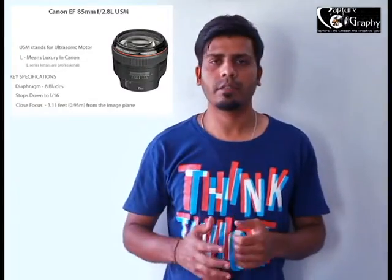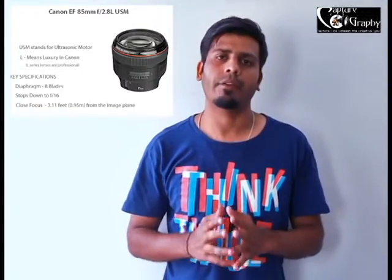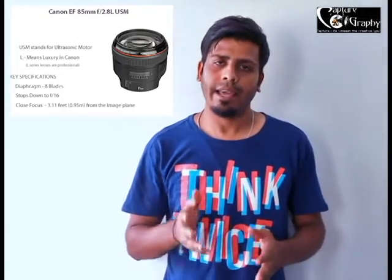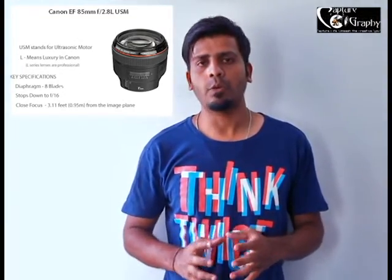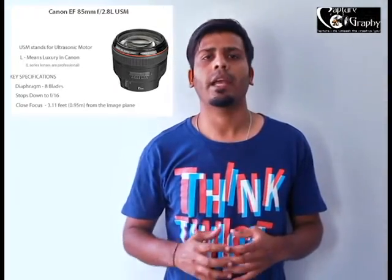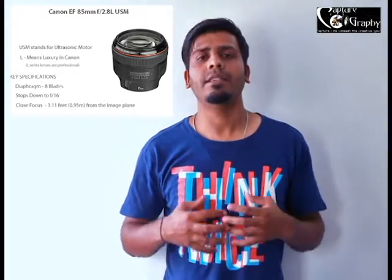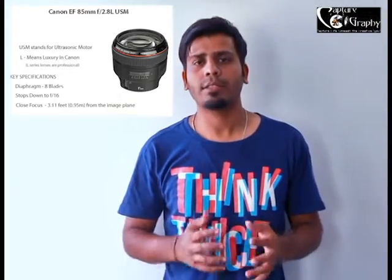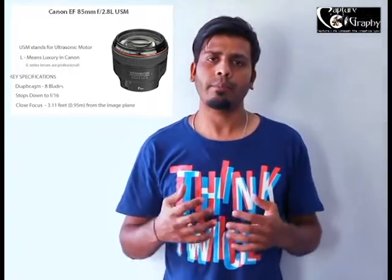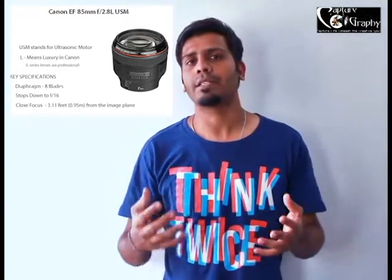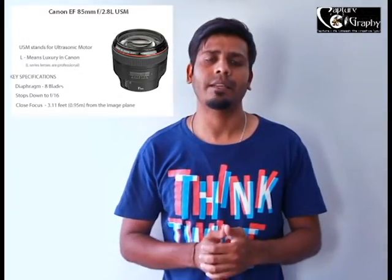The first lens we are going to discuss today is the Canon EF 85mm f2.8 L USM. This particular lens gives you amazing clarity and sharpness for your portraits because of the number of diaphragms it has. It has got 8 blades, and this lens can be used to take a picture of as close as 1 meter away, that is approximately 3 feet away.